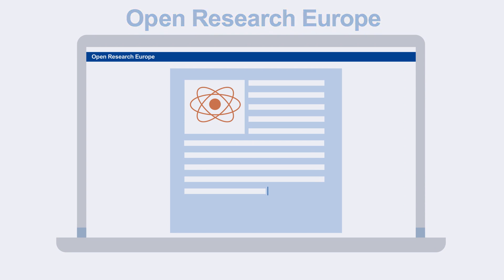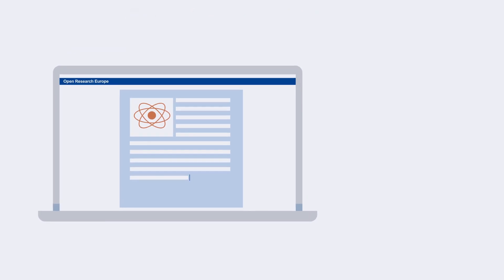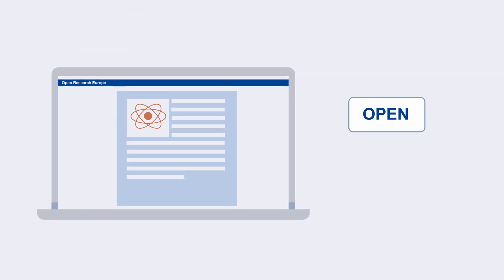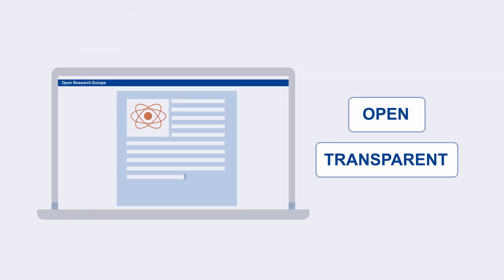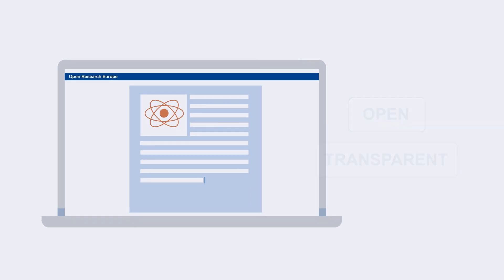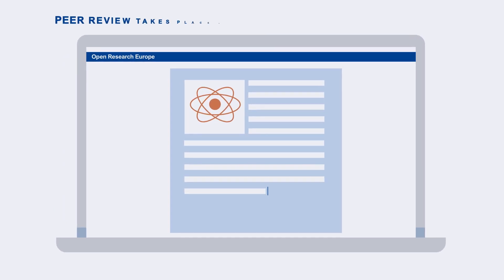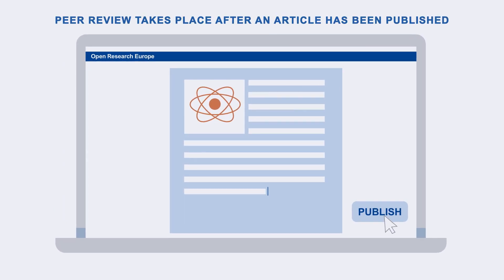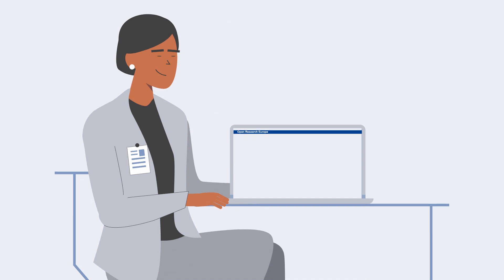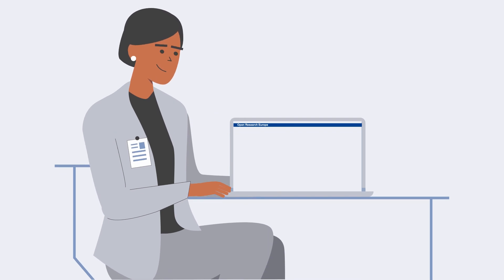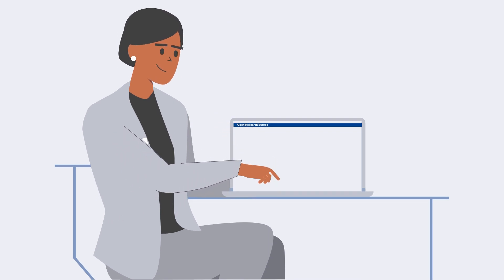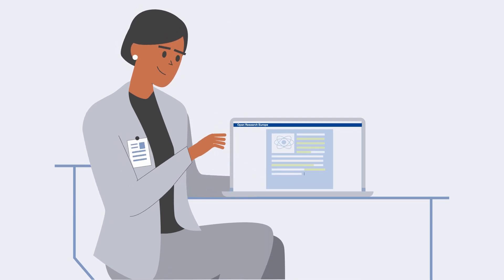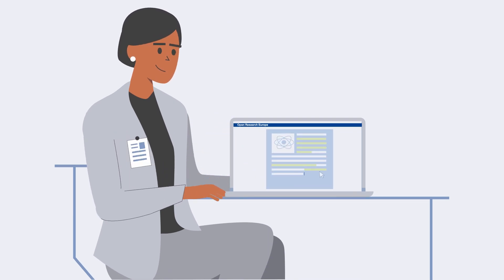Our post-publication peer review model is open and transparent. This means that peer review takes place after an article has been published. The reviewer assesses the academic validity of the article, rather than the novelty or interest levels.